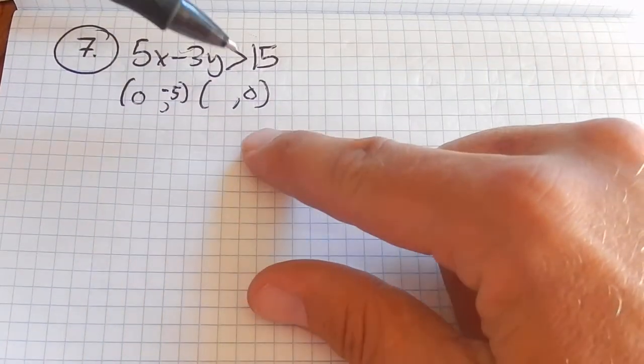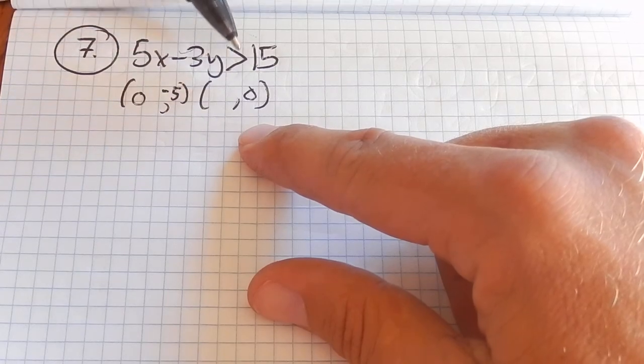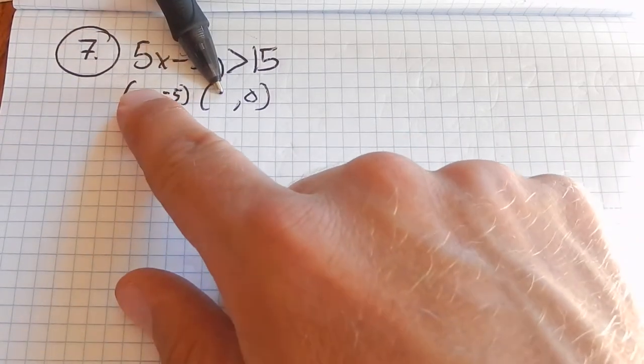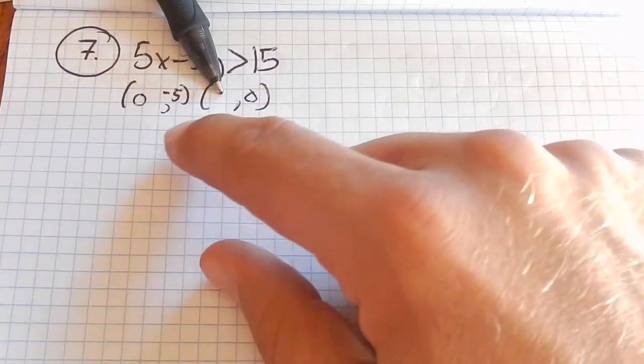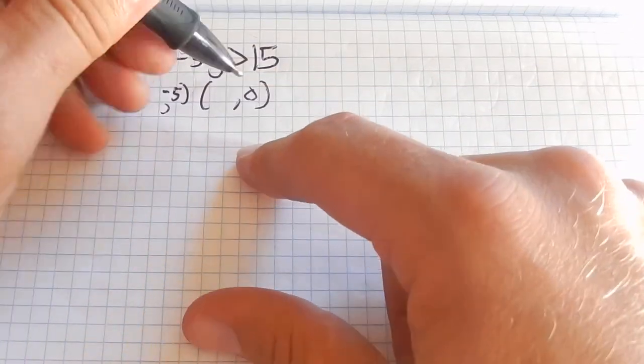I'm going to do the same thing with y. Plug in 0 for y. 3 times 0 is 0. So now I have 5x compared to 15. I want them equal, I want to know where they're equal, what the boundary is. So 5 times something is 15. That's 3.